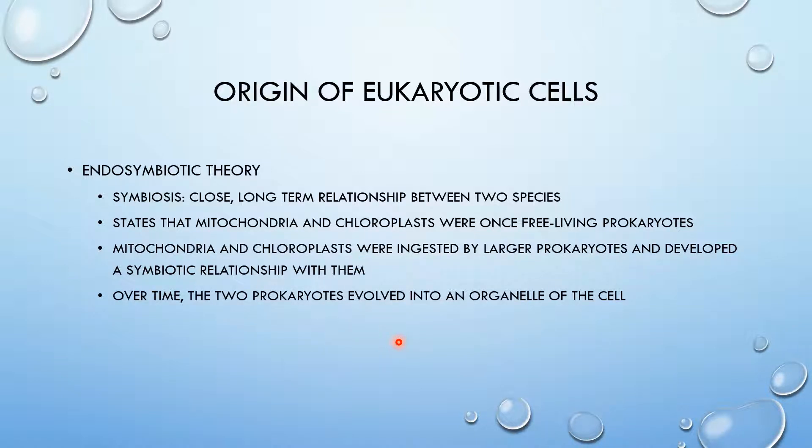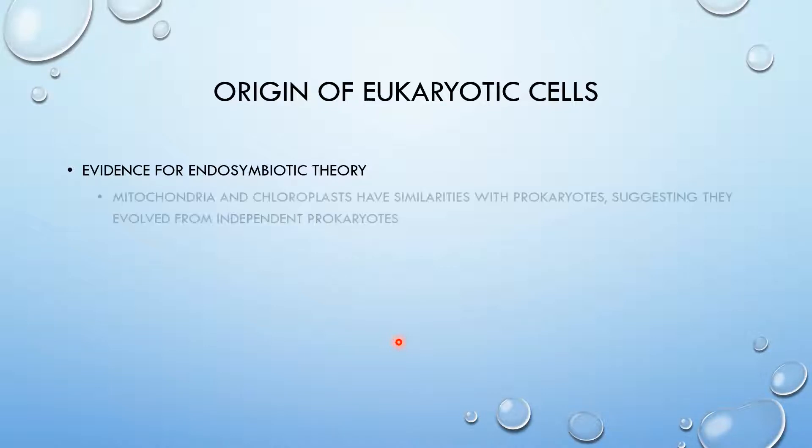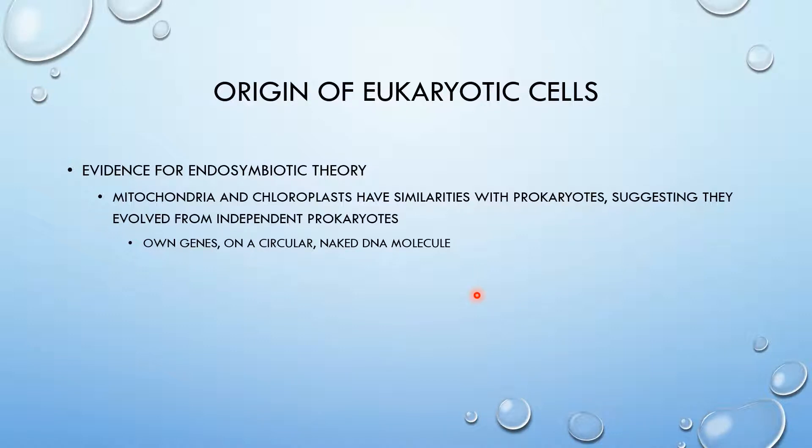Over time, the two prokaryotes evolved into an organelle of a cell, and now chloroplasts and mitochondria cannot survive outside of a normal cell. So evidence for the endosymbiotic theory includes that mitochondria and chloroplasts have similarities with prokaryotes, suggesting they evolved from independent prokaryotes. They have their own genes on a circular naked DNA molecule, just like prokaryotes. They have their own 70S ribosomes, which is the size for the ribosomes in prokaryotes. They transcribe DNA and use the mRNA to synthesize some of their own proteins. They even synthesize some of their own proteins, which is strong evidence for chloroplasts and mitochondria once being their own separate cell.